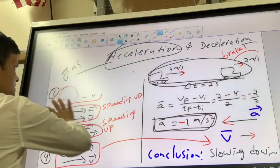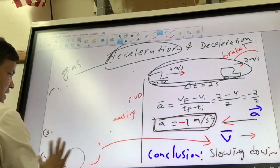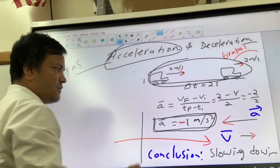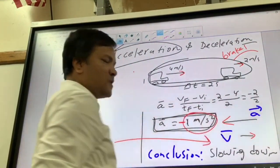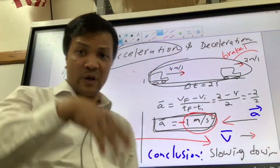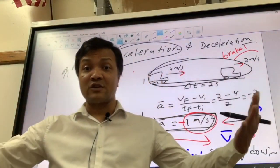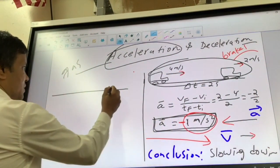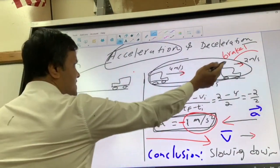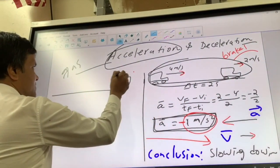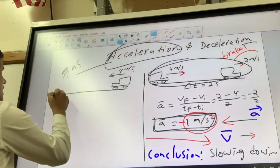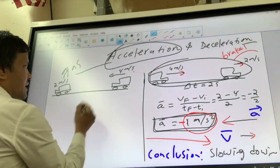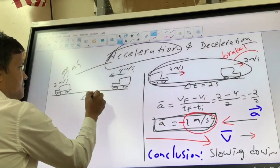As I promised, I'll show you a similar example where the car slows down even with a positive acceleration. People believe a car doesn't slow down if the acceleration is positive. This time the car moves in the opposite direction — the velocity is negative 4 meters per second and slows down to negative 2 meters per second over 2 seconds.